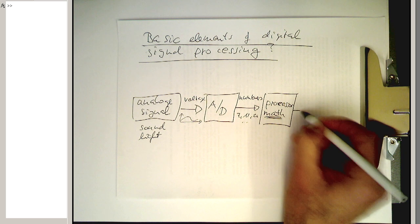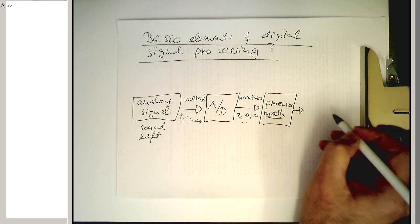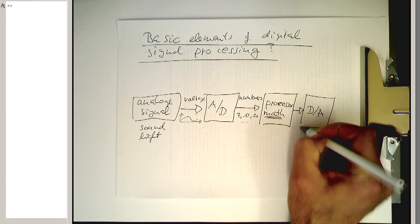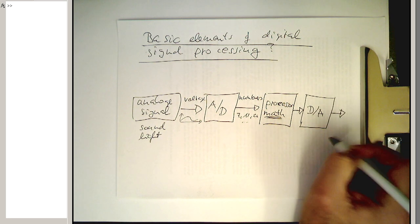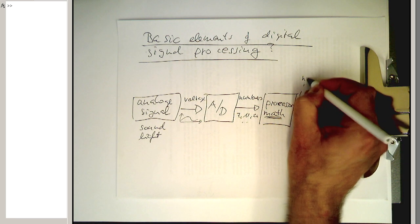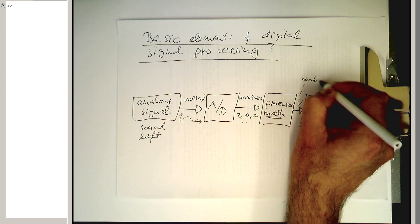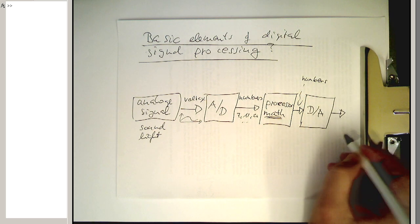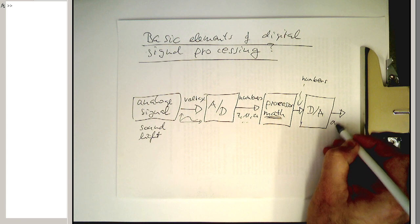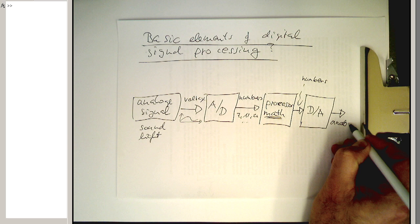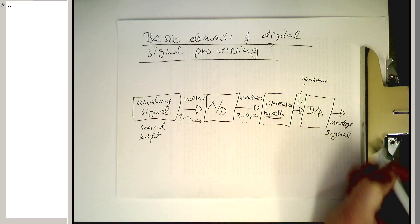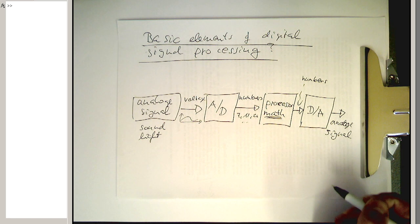And then on the other hand, on the other side, we have just the opposite. So we have a DA converter. And then we've got the output here. So again here we've got numbers, and here we've got again an analog signal. So that's the general idea of this.